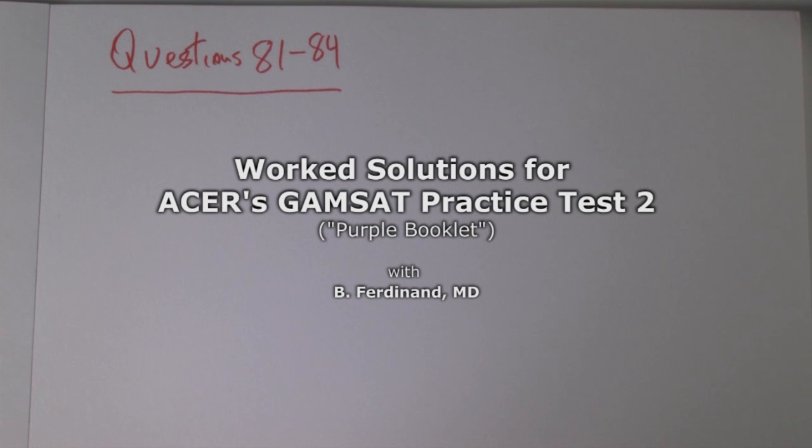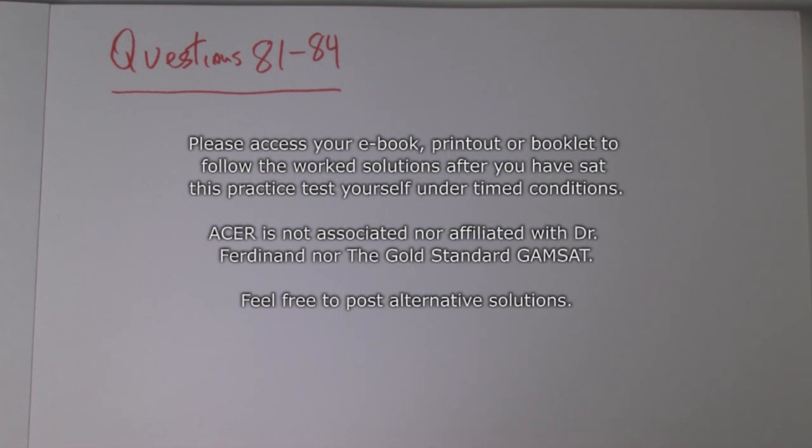Questions 81 to 84 are about Henry's law. They describe the law, give us some values, and talk about dissolved air extracted from one liter of plasma. They tell us how much nitrogen and oxygen is in that plasma, and there is indeed more nitrogen. They ask why there is more nitrogen than oxygen in the extracted air.